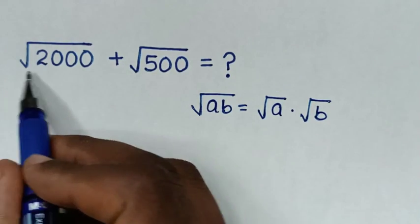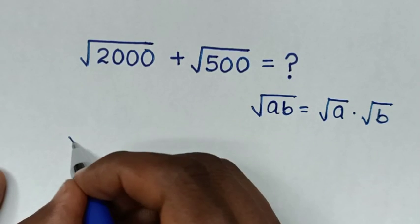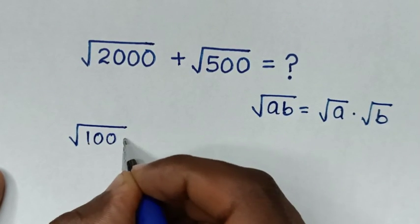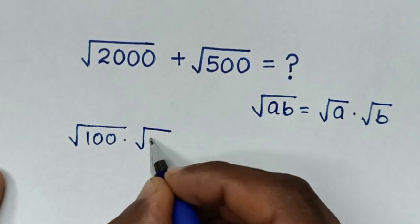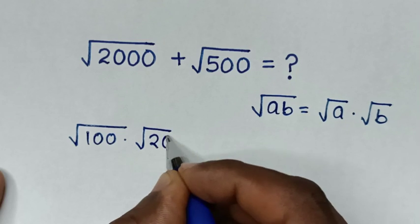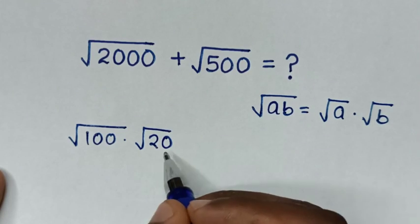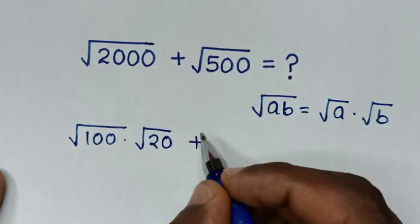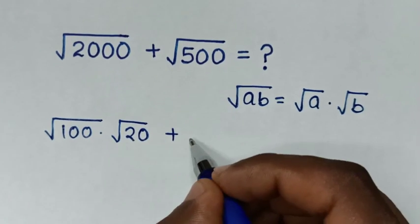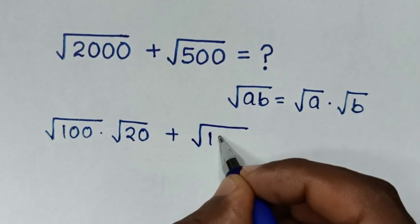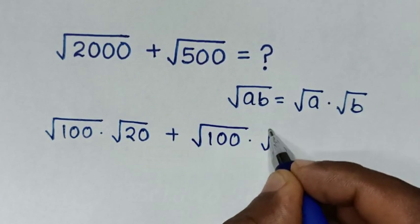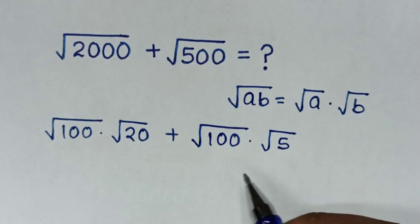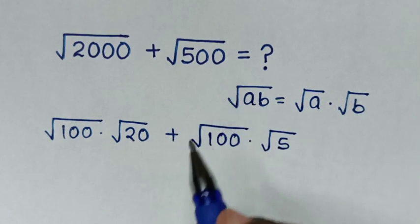From square root of 2000, it is the same as square root of 100 times square root of 20, because 100 times 20 is 2000. Then, plus square root of 500 is the same as square root of 100 times square root of 5, because 100 times 5 is 500.